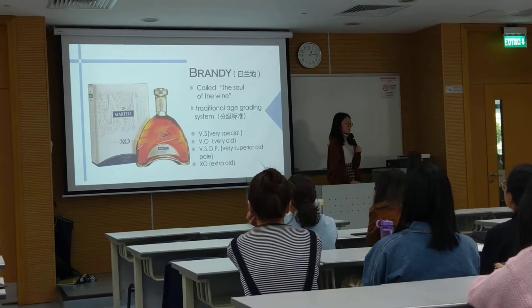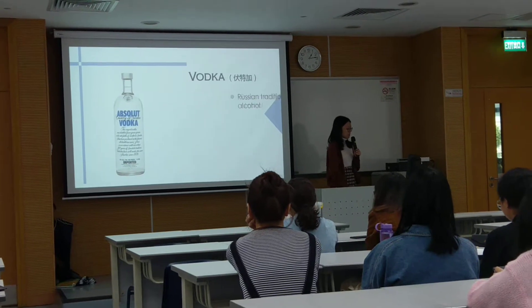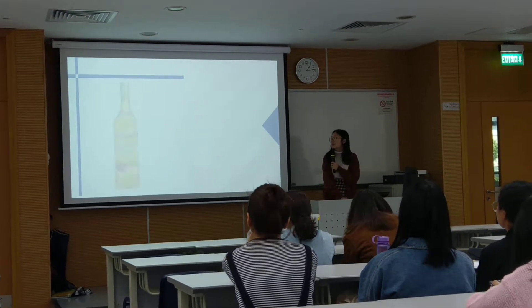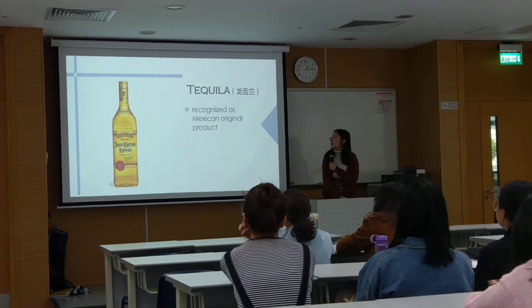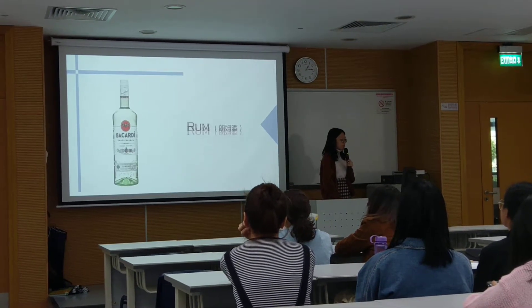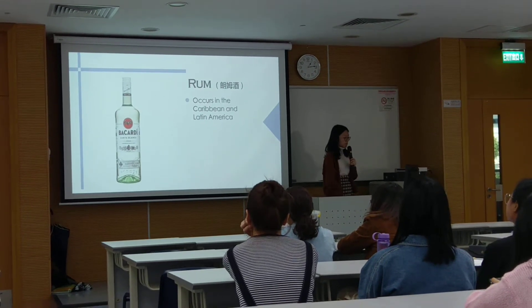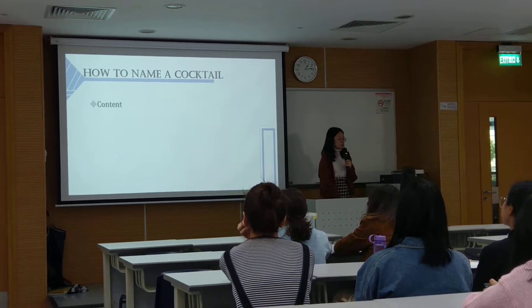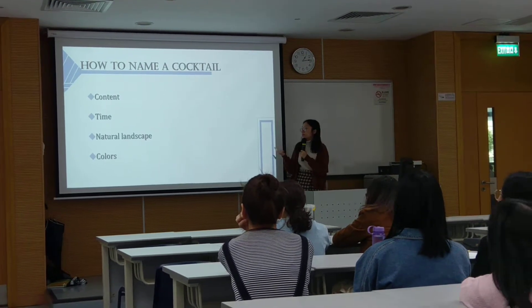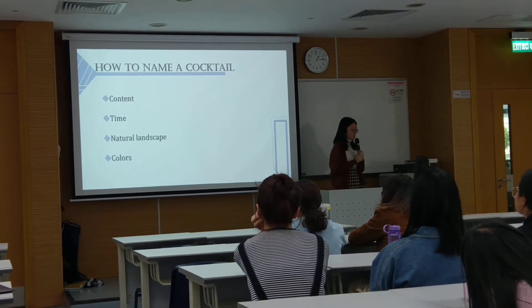Martell's extra old is truly my favorite. The next one is vodka — it is a Russian traditional alcohol. The next one is tequila, which is recognized as a Mexican original product. And the last one is rum, which originated in the Caribbean and Latin America. To name a cocktail, we have four simple ways: by its content, by the time when it was made, by its natural landscape, and by its color.